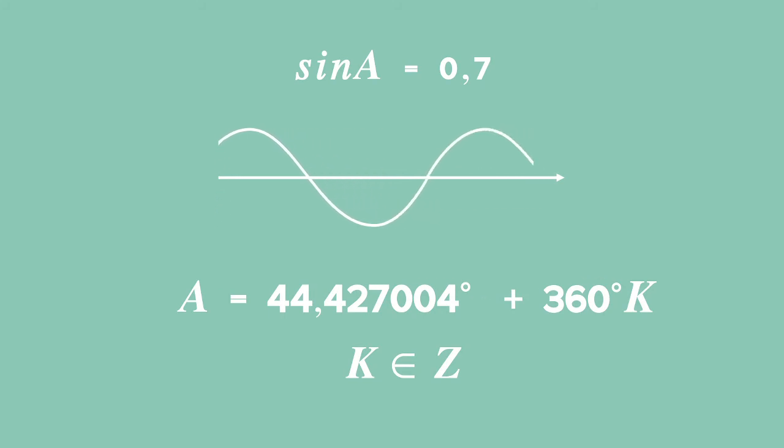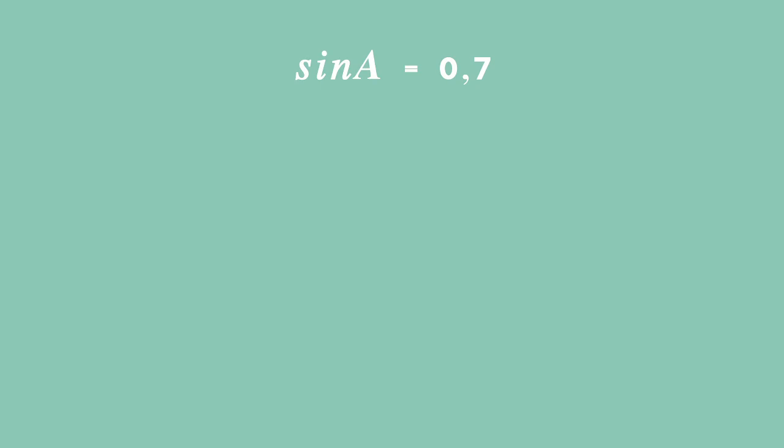We then use the Cartesian plane to place the ratio and find out where sine is positive, and that happens in the first and second quadrant. One of our answers for our general solution will be A is equal to, in the first quadrant, 44.4 degrees plus K times 360.